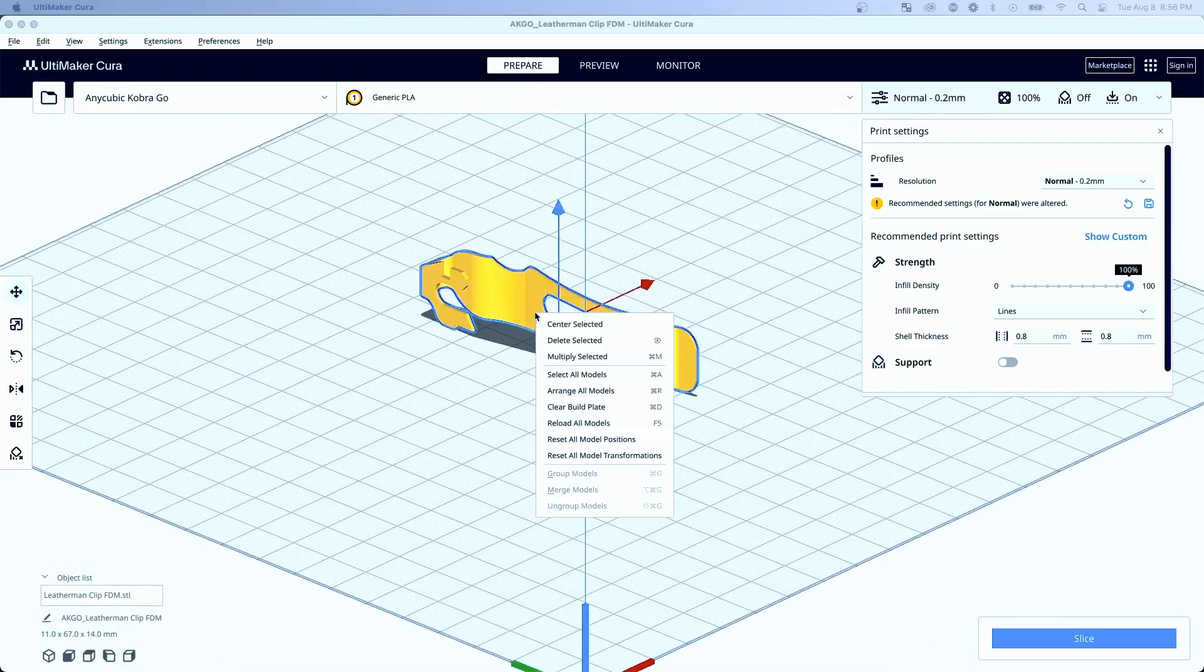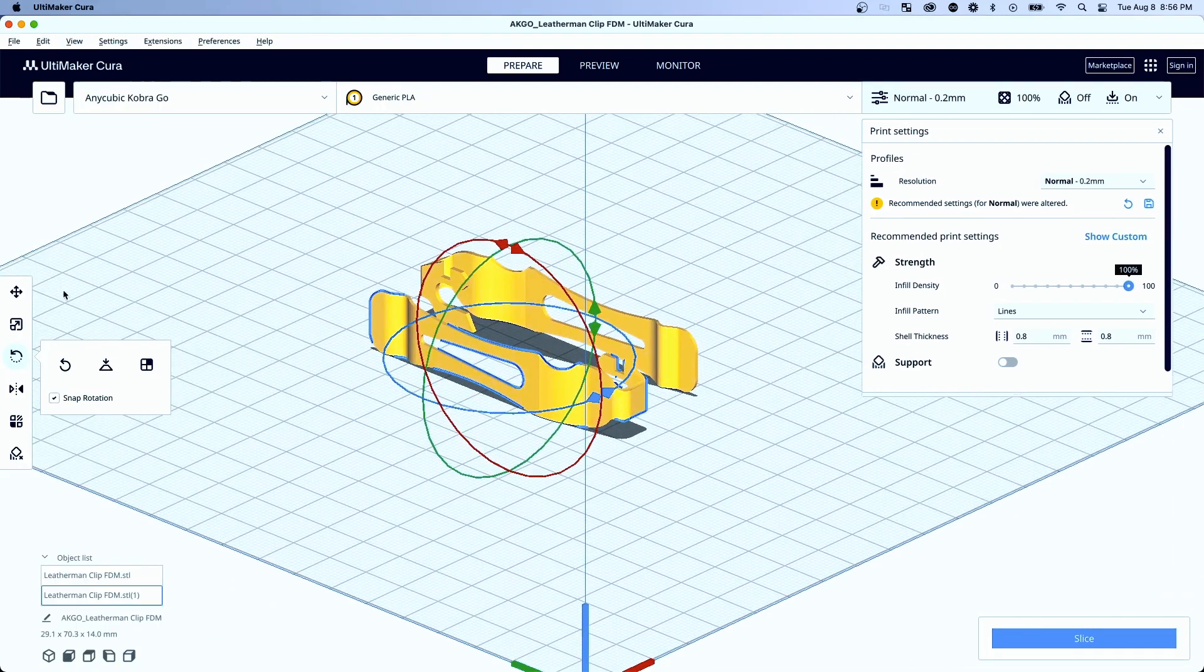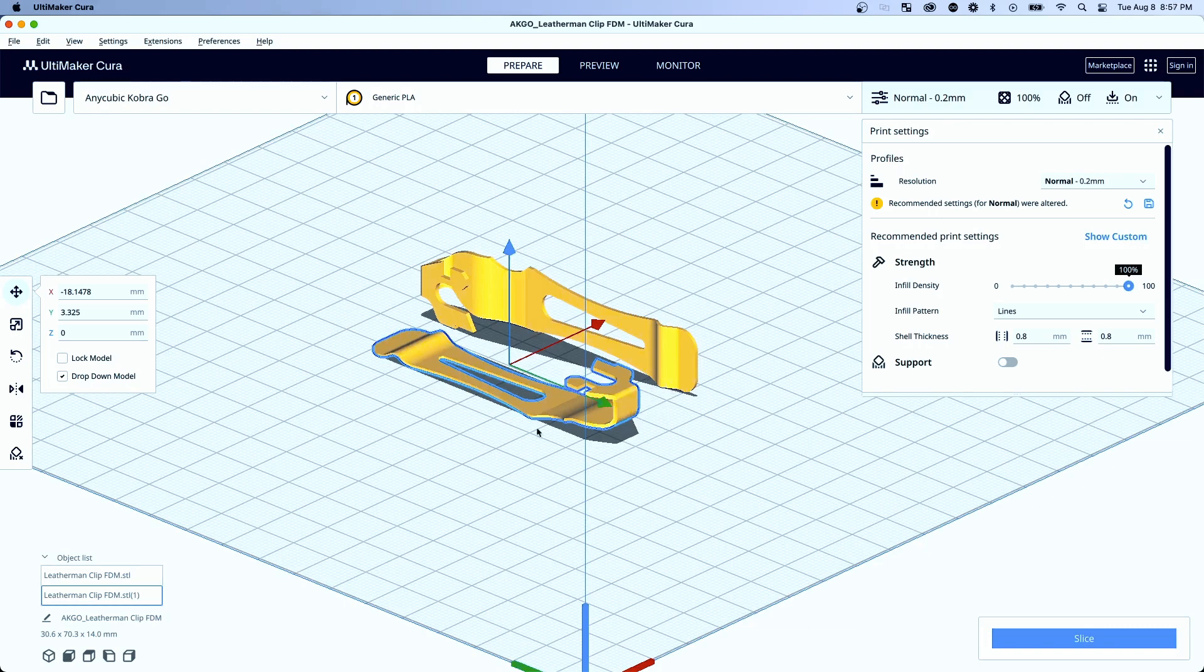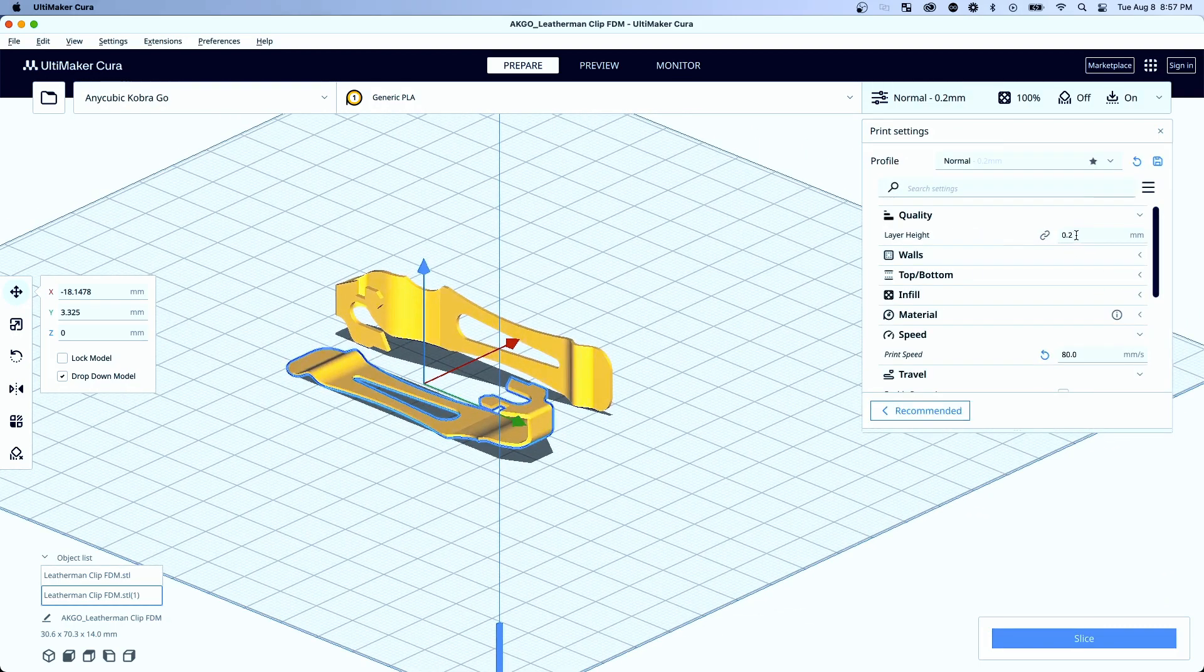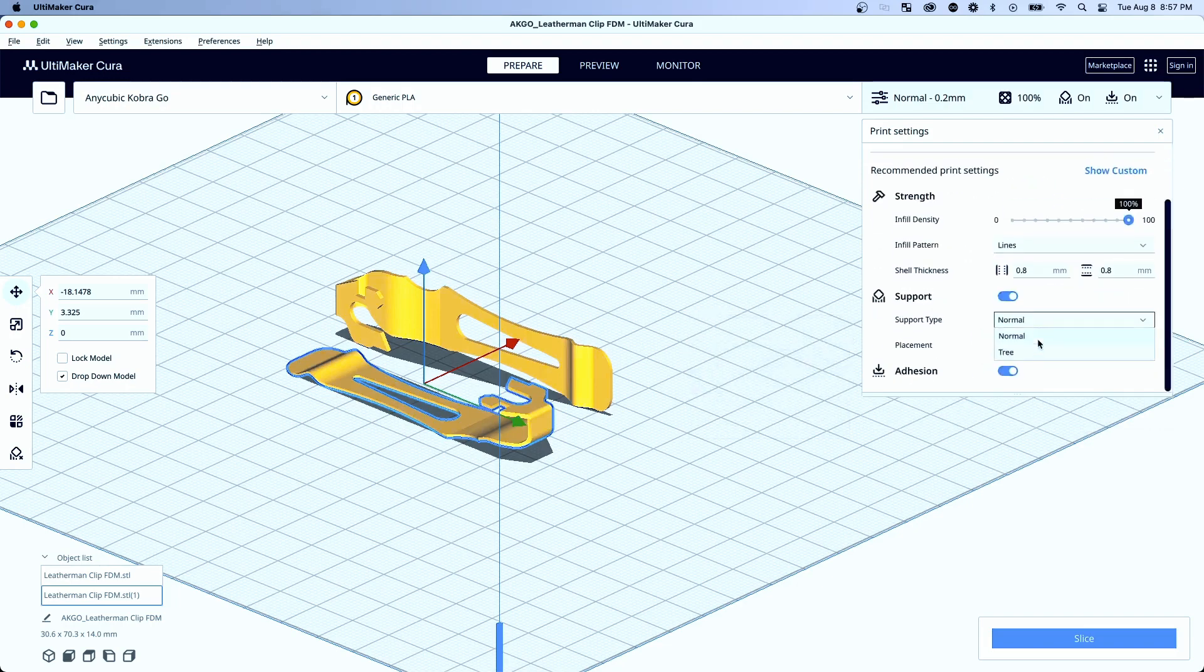After exporting the STL file from Fusion 360, I put it into Cura to generate the G-code for the printer. I laid two down on the build plate and configured the settings before getting it over to the Cobra Go for printing.